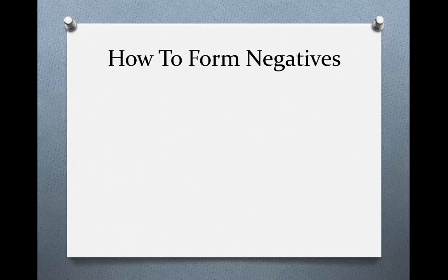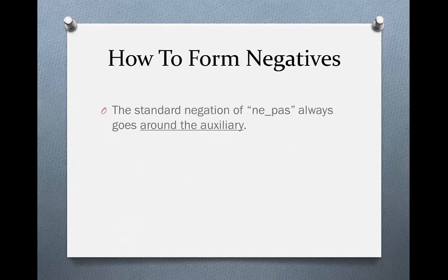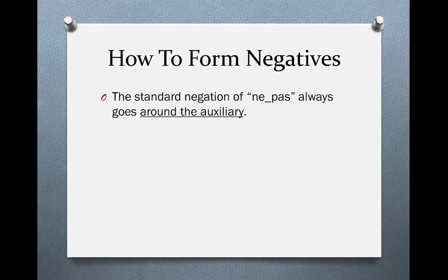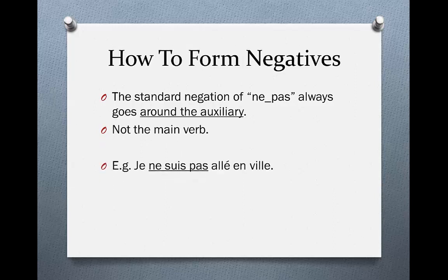So how do we form negatives? The standard negation, ne...pas, always goes around the auxiliary in le passé composé, and not around the main verb. For example, je ne suis pas allé en ville. As we can see, ne and pas go around suis, the auxiliary, as opposed to allé, which is the past participle.